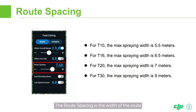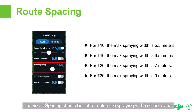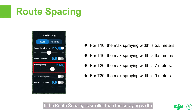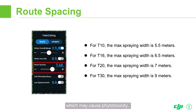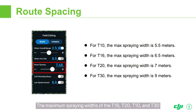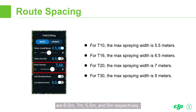The route spacing is the width of the route — that is, the distance the agri-drone moves laterally. The route spacing should be set to match the spraying width of the drone. If the route spacing is larger than the spraying width, some areas will not be sprayed. If the route spacing is smaller than the spraying width, some areas will be sprayed multiple times, which may cause phytotoxicity. Therefore, the row spacing should be set differently for different models. The maximum spraying widths of the T-16, T-20, T-10, and T-30 are 6.5 meters, 7 meters, 5.5 meters, and 9 meters, respectively.